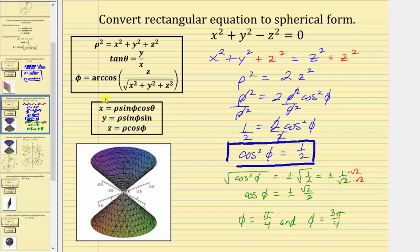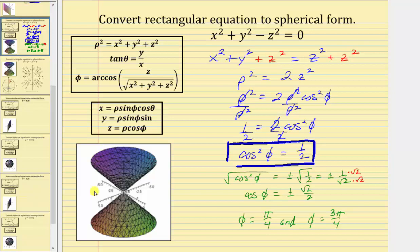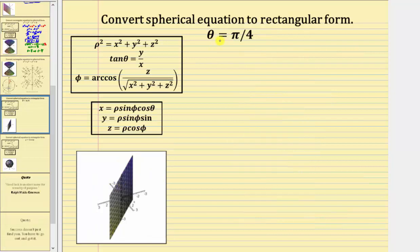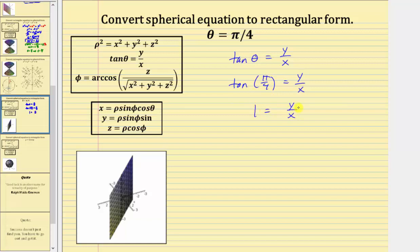Now let's look at two examples of converting from spherical form to rectangular form. First, convert the equation theta equals pi over four to rectangular form. The graph is a plane shown below. Since tangent theta equals y divided by x, we substitute pi over four for theta: tangent of pi over four equals y divided by x. Tangent of pi over four equals one, giving us one equals y divided by x. Multiplying both sides by x gives us x equals y, or y equals x, which is the rectangular equation.